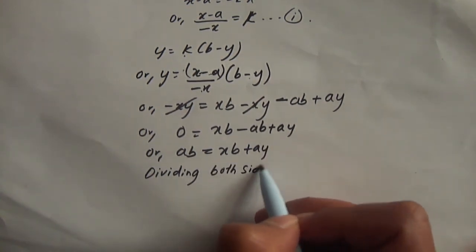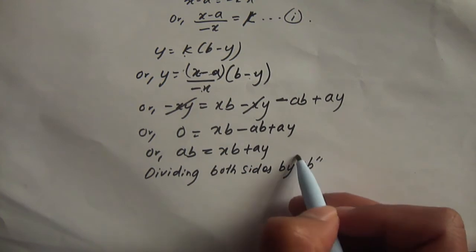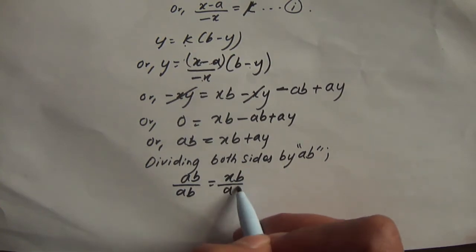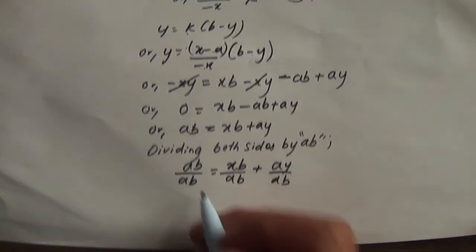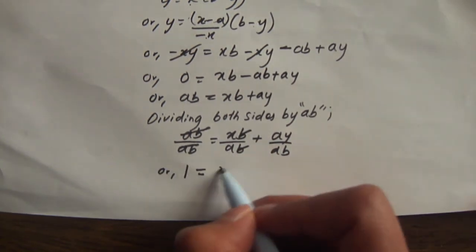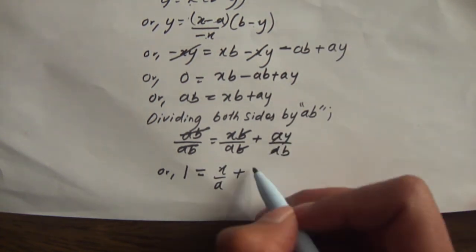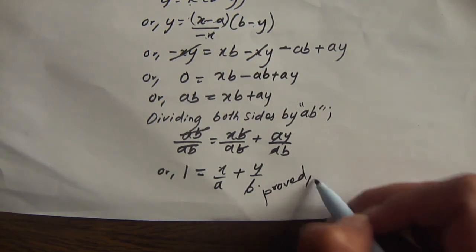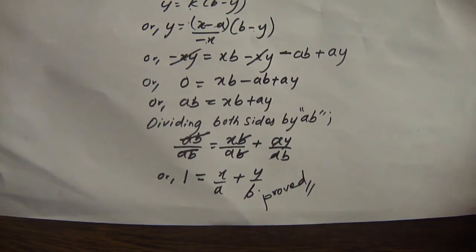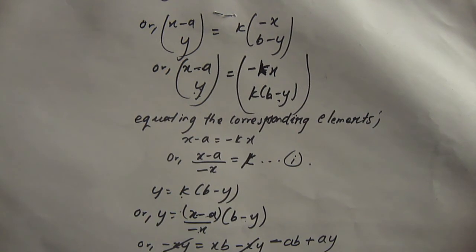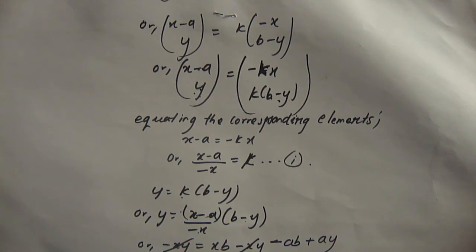Dividing both sides by ab: ab by ab equals xb by ab plus ay by ab, so ab and ab cancel, giving 1 equals x by a plus y by b. So our vector method proof is complete. Please give feedback, like the video, and see you in the next video. This is Bikram, thank you.